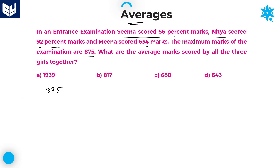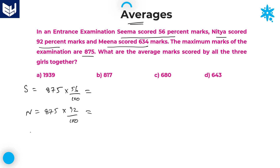According to the first statement, Seema scored 56 percentage. What is 56 percentage of 875? That is the marks scored by Seema. Next, Nithya — out of 875 total marks, Nithya scored 92 percentage. That is the total marks scored by Nithya. And next, Meena scored directly — that value is given, which is 634.